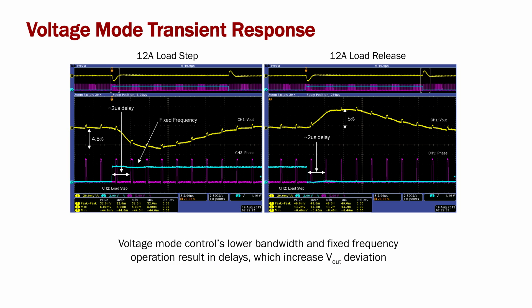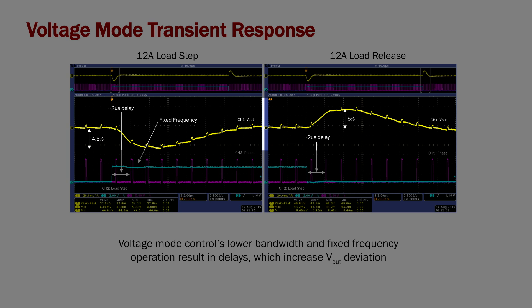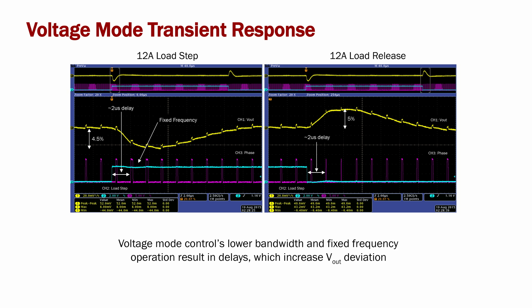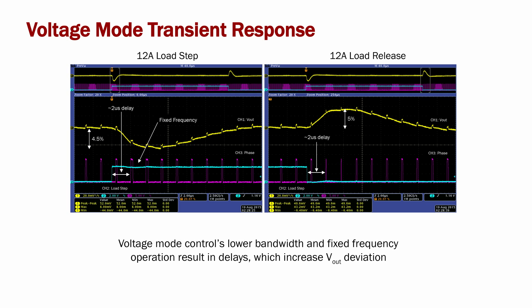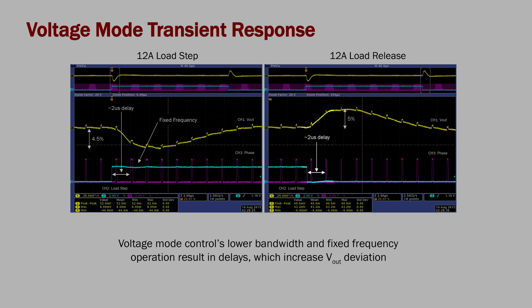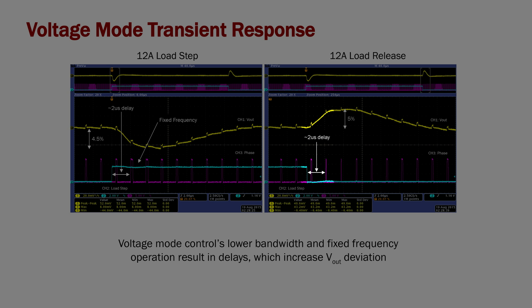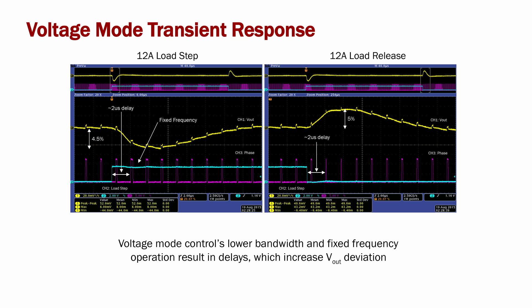Here we're showcasing the transient response of a voltage mode controller with a 12 amp load step applied. Channel 1 is the output voltage, channel 3 is the switch node, and channel 2 is the load step that's been applied. With a load step, the output voltage deviates by about 4.5%. There is a 2 microsecond delay until the controller can respond to the load step due to the compensation around the error amplifier. On the load release side, Vout deviates by approximately 5%. Again, there's about a 2 microsecond delay until the controller can respond to the load transient because of the compensation around the error amplifier.